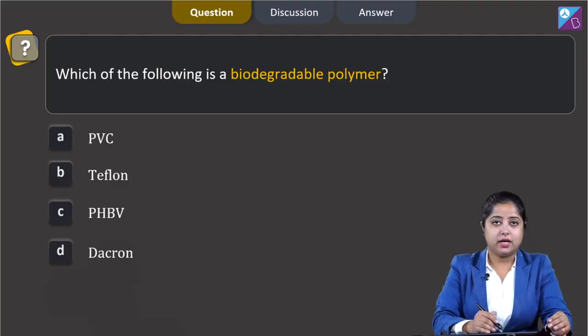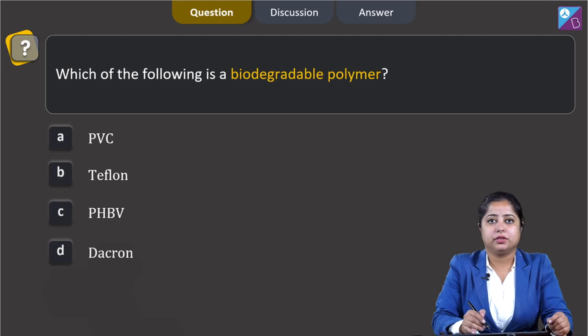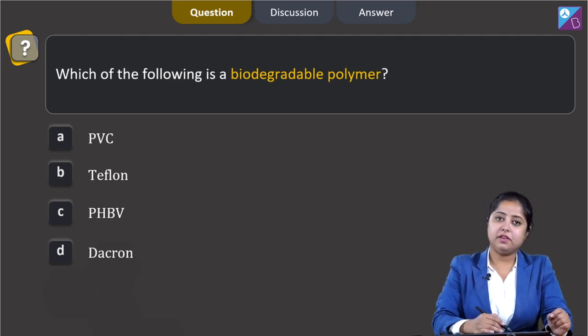Which of the following is a biodegradable polymer? The options are PVC, Teflon, PHBV, or Dacron.